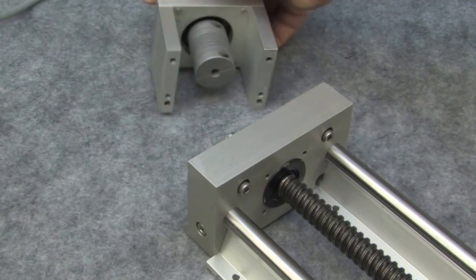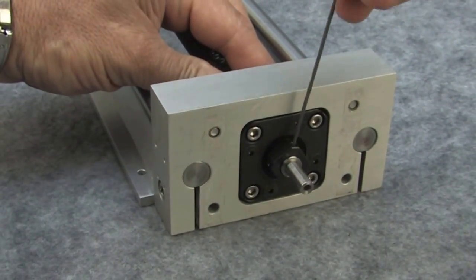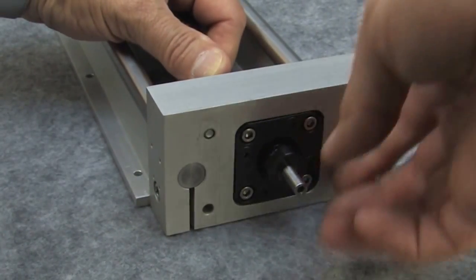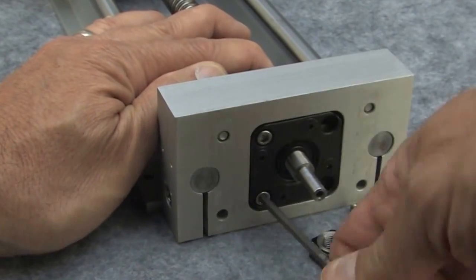Remove the motor and coupler. Loosen the two support screws on the support bearing lock nut and remove the nut. You'll need to hold the carriage still to prevent the screw from turning. Remove the four screws holding the bearing flange in place.